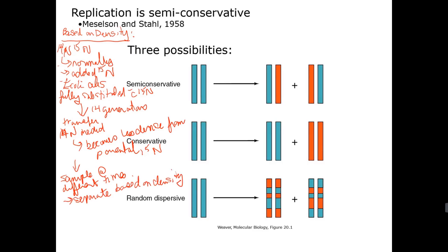And then they have to have some means of separating based on density. And then I did go through this last time. So what they would do is they would make an extract of these cells and then apply it to a density gradient. So again if we had our test tube, we would have a solution of cesium chloride.